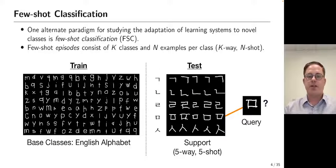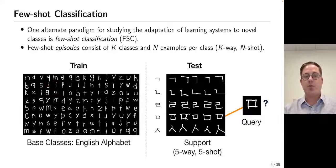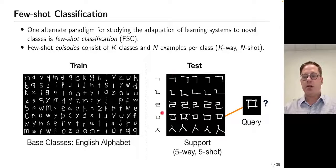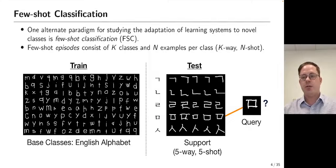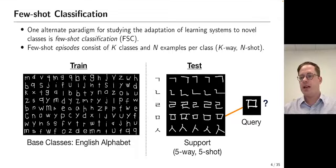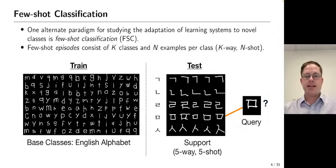A natural question arises: how can we broaden the standard supervised learning paradigm — which has large dataset sizes and a fixed number of output classes — to handle situations where data is scarce and new classes may arise over time? One alternate paradigm for studying these questions is known as few-shot classification, or FSC. In few-shot classification, at training time a learner has access to a large labeled dataset with ample data for each class, but at task time the learner is presented with few-shot episodes consisting of a small support set with just a few examples of each of a few novel classes. An episode with K classes and N examples per class is called a K-way, N-shot episode.